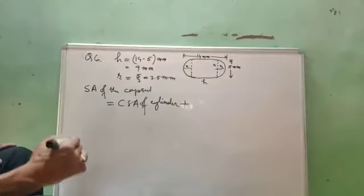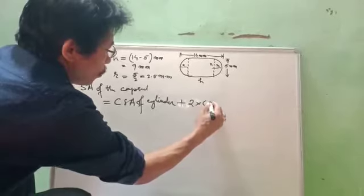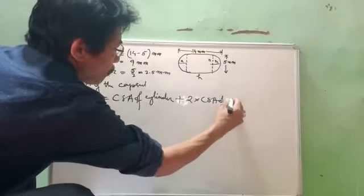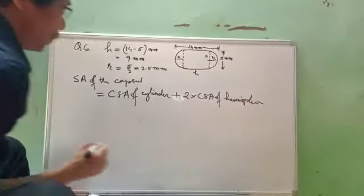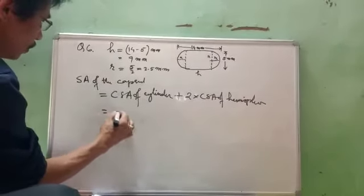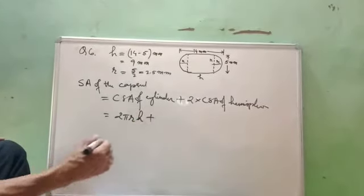And then plus, there are two hemispherical ends. So we'll write here 2 into, this is also CSA of hemisphere. CSA of hemisphere. So CSA of cylinder formalizes 2πrh plus CSA of hemisphere.